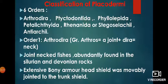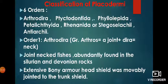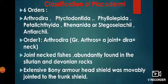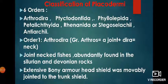The fifth order is Renanida, and its example is Gemuendina — G-E-M-U-E-N-D-I-N-A. The sixth order is Antiarchi, and its examples are Bothriolepis and Pterichthys — P-T-E-R-I-C-H-T-H-Y-S, where the P is silent.